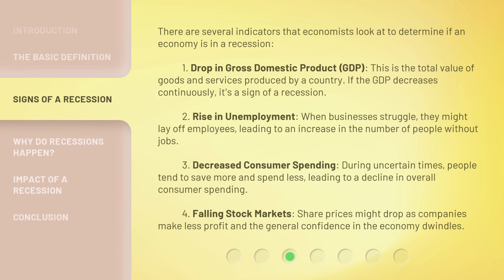There are several indicators that economists look at to determine if an economy is in a recession. First, a drop in gross domestic product — GDP. This is the total value of goods and services produced by a country. If the GDP decreases continuously, it's a sign of a recession.